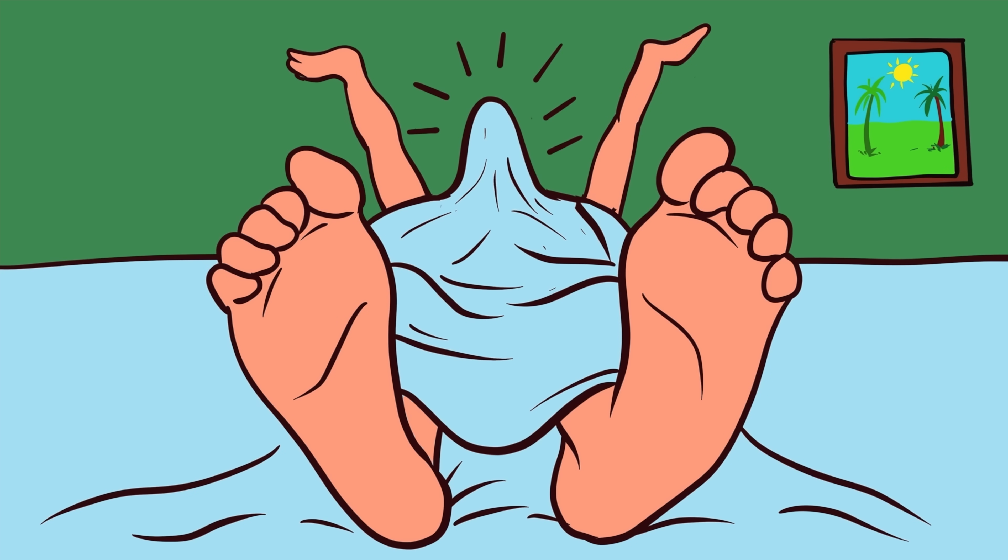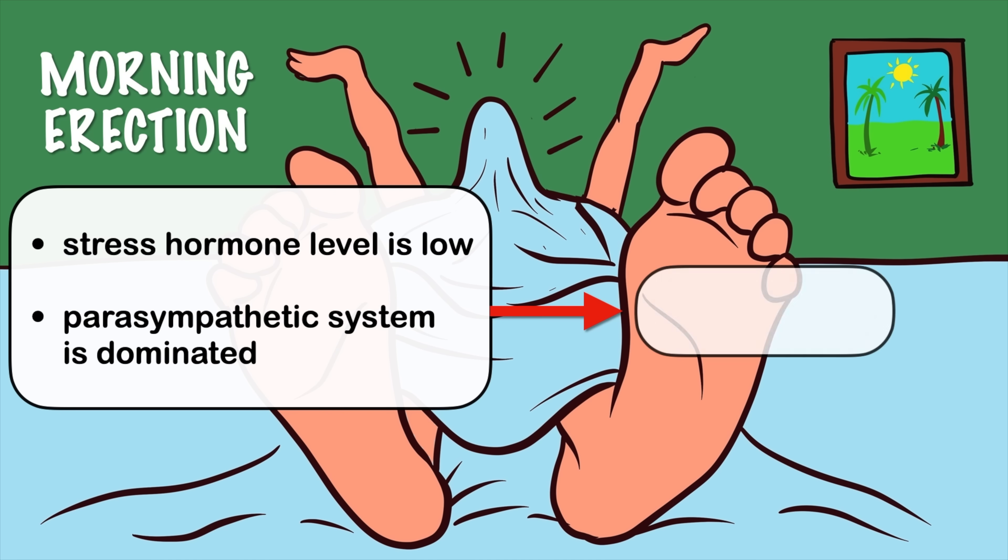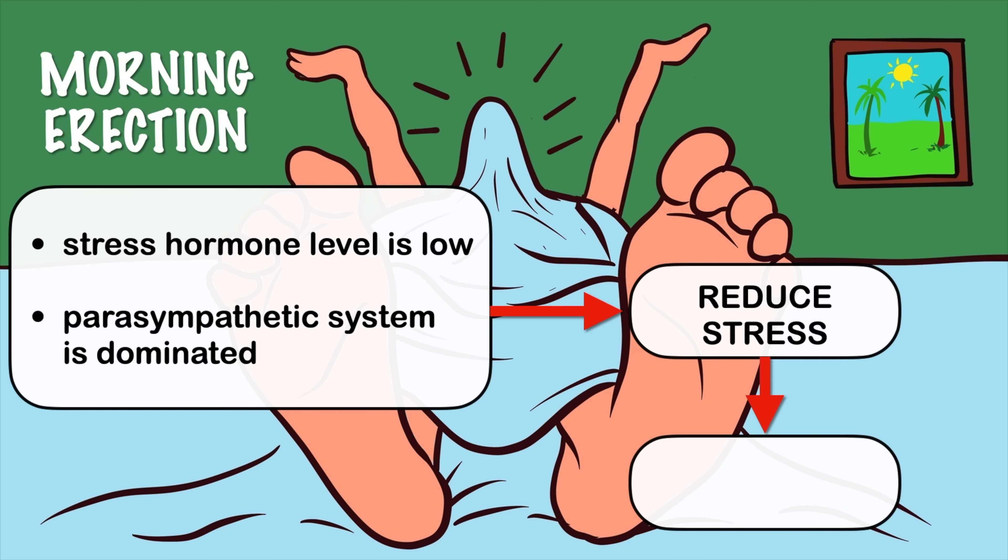In the beginning we spoke about morning erection. In the morning when you are in sleep the stress hormone level is low and your parasympathetic system is dominated. So if you are suffering from erectile dysfunction and you have normal morning erection then the problem could be the stress. If you could reduce the stress the problem of erection will automatically reduce.